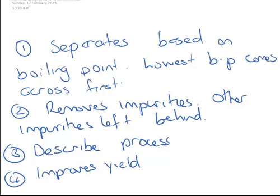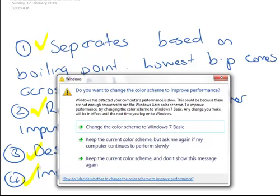To sum up distillation, it separates based on boiling point. The lowest boiling point organic chemical comes across first. If that's the one that you want, you're able to remove impurities and other impurities will be left behind so you're going to get a pure product. You want to make sure the temperature doesn't get so high that other organic chemicals will come across as well. You should be able to describe this process: the organic molecules turn into a gas, as they come across they're cooled down by the condenser with the water going through it, turn back into a liquid, and then that's collected in the reaction vessel. This can obviously also end up with an improved yield.